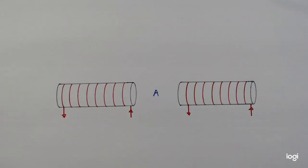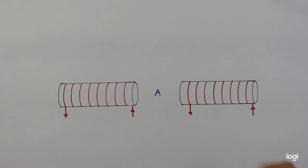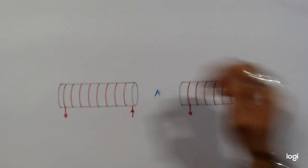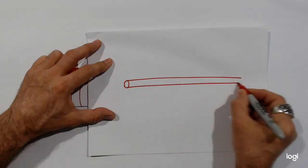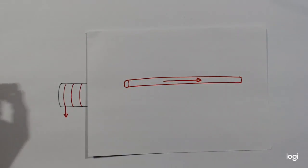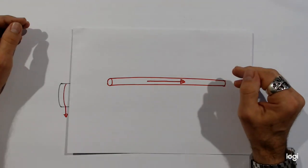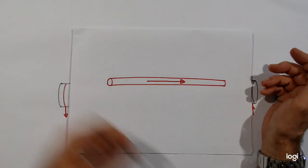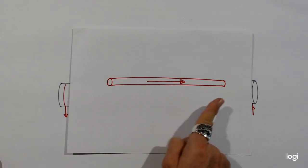Question two is about the right-hand screw rule, and this is a difficult question for a lot of people because it doesn't involve calculations — it involves explaining things. There are two versions of this rule. One is for a wire carrying current. Keep in mind this is for conventional current — if they say specifically electron flow, you need to use your left hand. Conventional current involves positives moving the other way, even though we know electrons are actually moving. If they just say 'current,' assume conventional current, so use your right hand.